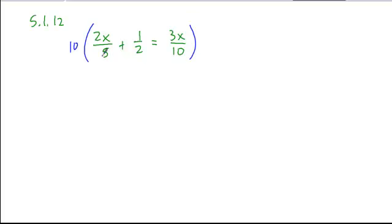So if we just know our LCD has to be 5, 2, and 10, the smallest factor that goes into all of those would be 10.